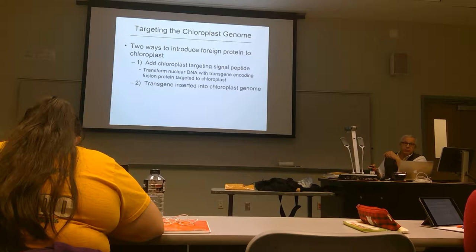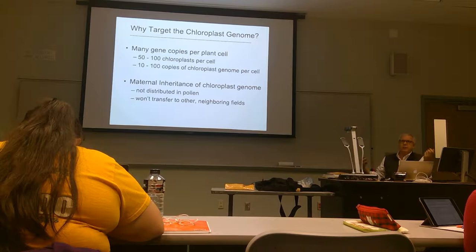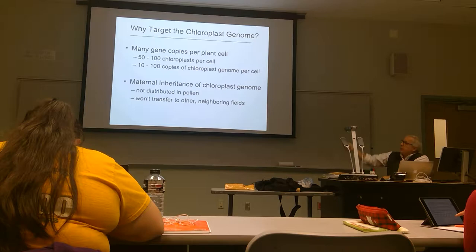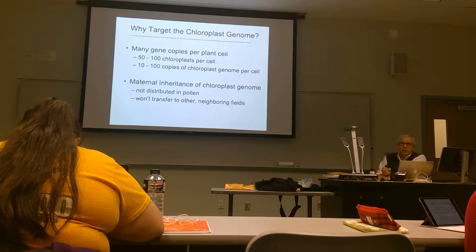Why do we want to do that? If we have methods to get the gene into the plant genome, why put it in the chloroplast genome? Basically, one of the advantages is that it's a copy number issue. In plant cells, there are anywhere from 50 to 100 chloroplasts per cell, and there are anywhere from 10 to 100 copies of the chloroplast genome per chloroplast. So if you want high copy number, you want to put it in the chloroplast genome.